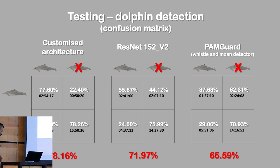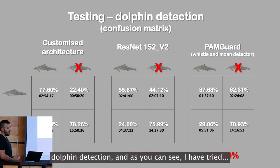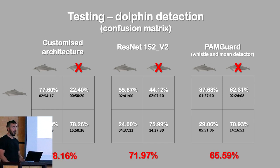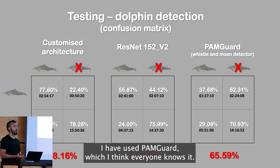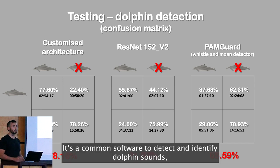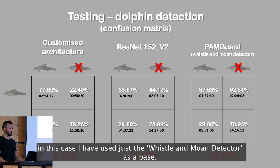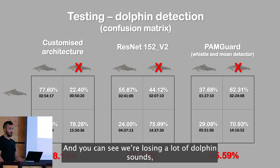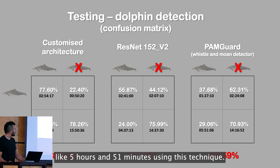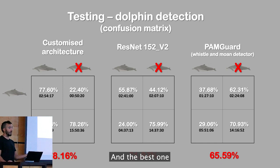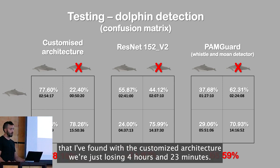For testing dolphin detection, I used PAMGuard, which I think everyone knows — a common software to detect and identify dolphin sounds. In this case, I used just the Whistle and Moan detector as a baseline. You can see we're losing a lot of dolphin sounds — five hours and 51 minutes — using that technique. The best result I found, with my custom architecture, we're only losing four hours and 23 minutes.